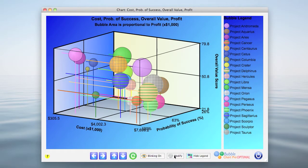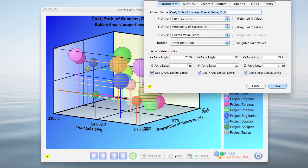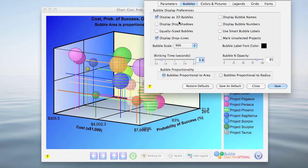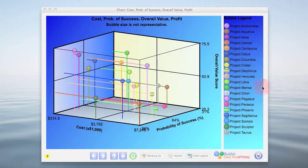Now, to get an even clearer picture, we can also turn this into a 3D scatter chart by clicking equally sized bubbles, and then we'll save and close the preferences form. And you can see that the bubbles are now all equally sized, so the size is not representative of profit anymore, but it helps to see exactly where they are relative to the grids.